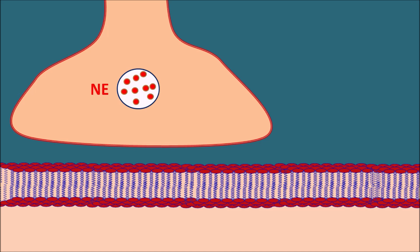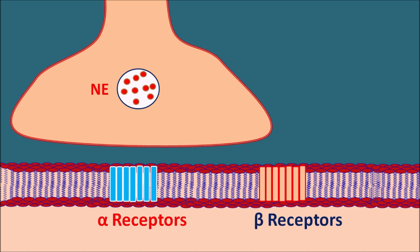At sympathetic neurons present both at the periphery and within the CNS, the important mediator is norepinephrine, which is stored in storage vesicles. On the postsynaptic membrane, alpha or beta receptors are present depending on location. When calcium enters the presynaptic neuron, it depolarizes and stimulates release of norepinephrine by exocytosis. This norepinephrine then acts on alpha or beta receptors, producing direct sympathetic stimulation.